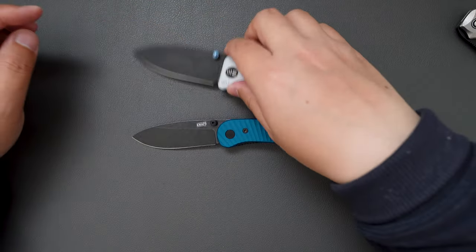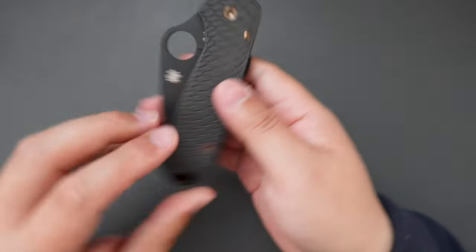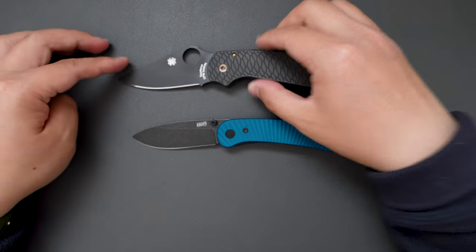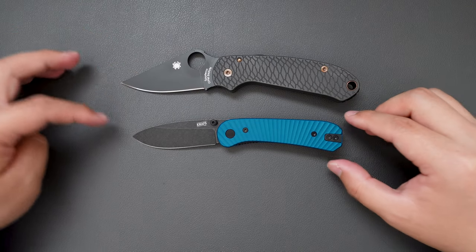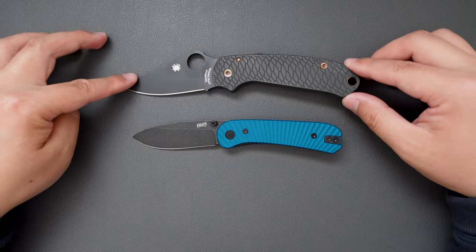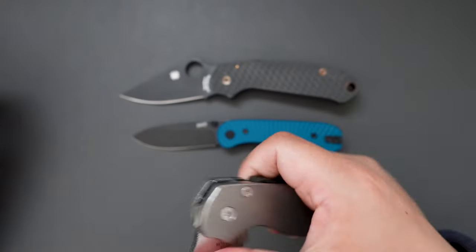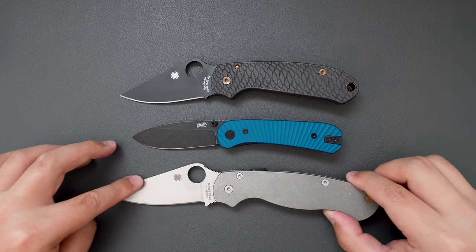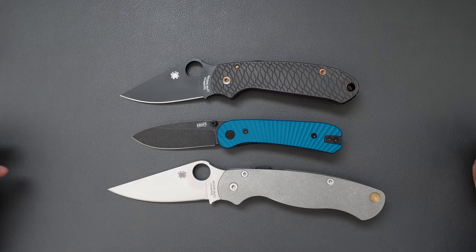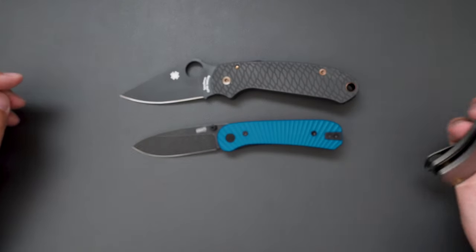And how about compare this with the Spyderco Paramilitary 3. As you can see, it's a little bit smaller than the Para 3. And how about PM2? Quite smaller than the PM2. There you go.